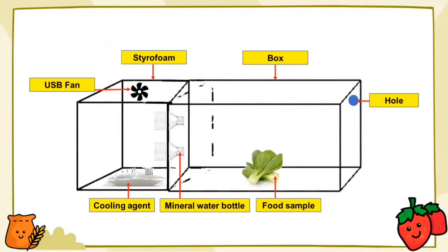This is the schematic diagram of wedge saviour. To create wedge saviour, we need a USB fan, styrofoam box, hole, cooling agent, mineral water bottle and food sample.